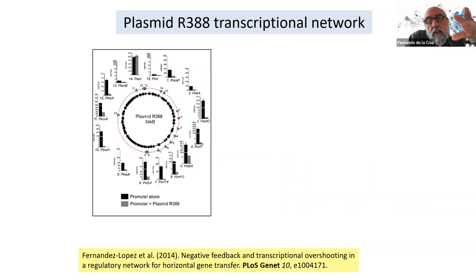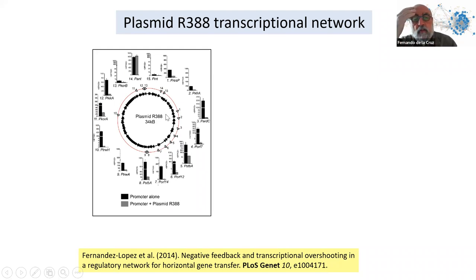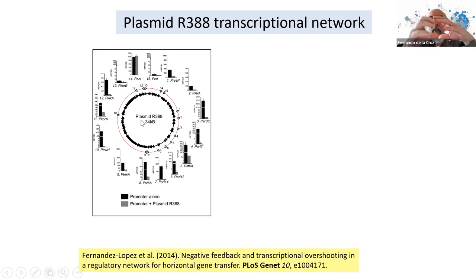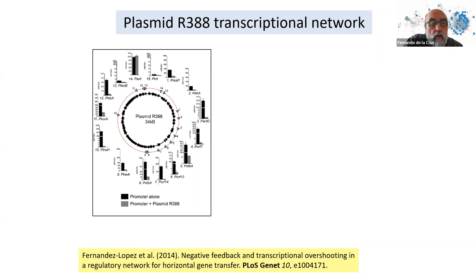Next: how are the genes in a plasmid expressed? For plasmid R388, which has 15 promoters, we cloned each promoter into the same expression vector to measure promoter strength. The black bars show constitutive expression. When we add R388 in trans, all promoters are completely reduced — they are repressed. So instead of having activators and repressors, plasmids like R388 use only repressors.